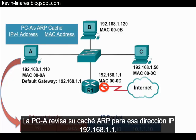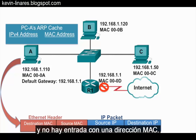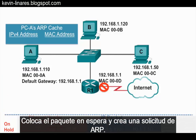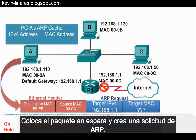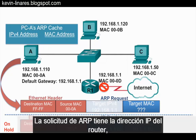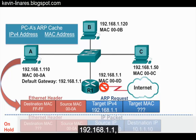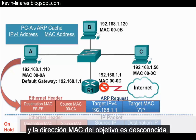PCA checks its ARP cache for that IP address, 192.168.1.1, and there's no entry with a MAC address. So it puts the packet on hold and creates an ARP request. The ARP request has the IP address of the router, 192.168.1.1, and the target MAC address is unknown.